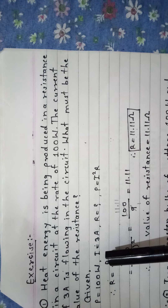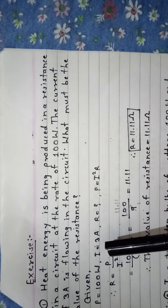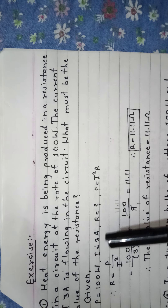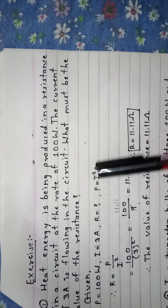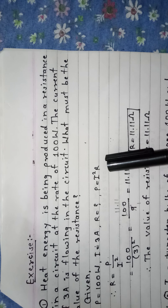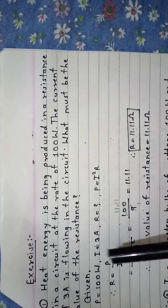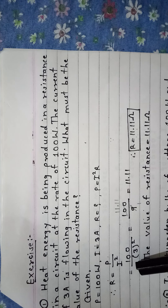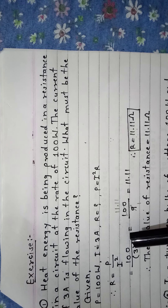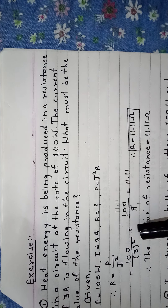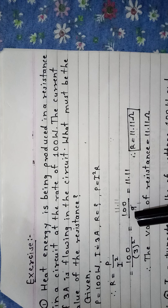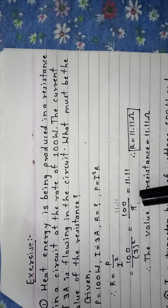Power P is equal to 100 Watt, current I is equal to 3 Ampere, resistance R is equal to question mark. Therefore, power is equal to I squared into R. Therefore R is equal to P upon I squared, that is equal to 100 upon 3 squared, that is equal to 100 upon 9.